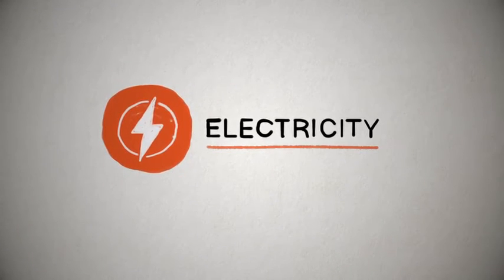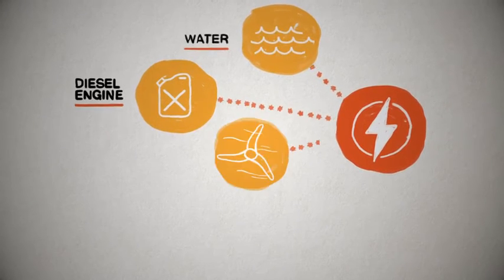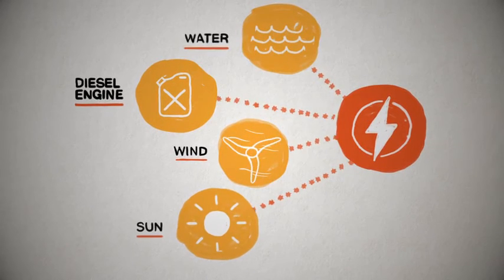Electricity is generated when energy is converted from one form, such as flowing water, diesel fuel, wind, or the sun, into electricity.